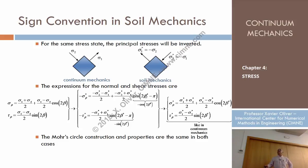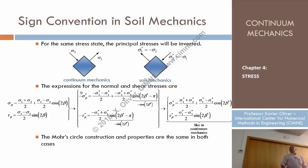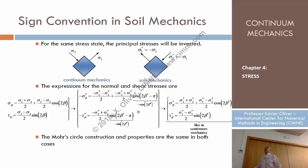Beta star is the direction of the plane with respect to sigma 1 star, while beta is the same plane's direction with respect to sigma 1. They differ by π/2, so twice the angle differs by π. Using cosine(2β* − π) = minus cosine(2β*) and then multiplying by minus 1, the formulas you obtain are exactly the same as before.